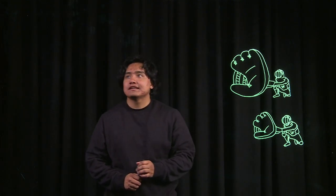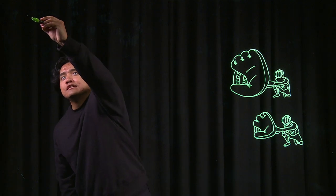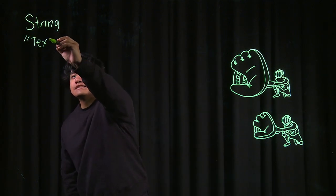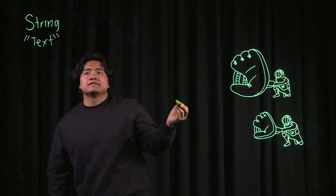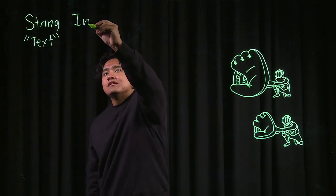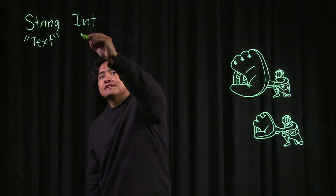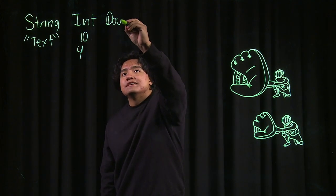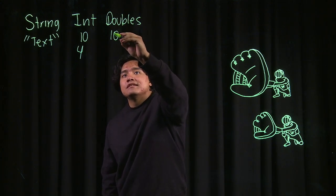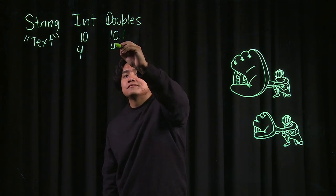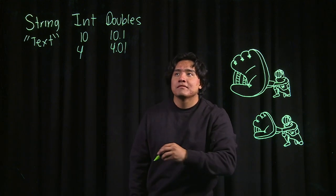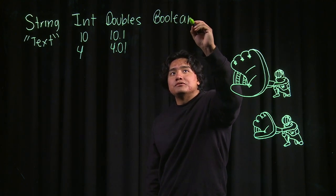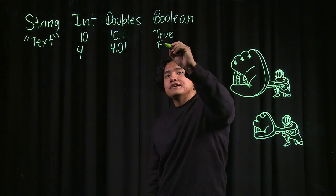Let me introduce you guys to some pretty basic data types in Java. We have string, which is meant to hold any text or words. We have integer — we use int for short — and that's pretty much any whole numbers, like 10 or 4. We also have doubles, which is pretty much any decimal values. And another cool one is boolean, which only holds true or false values.